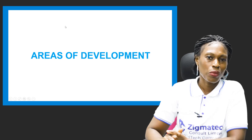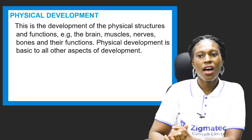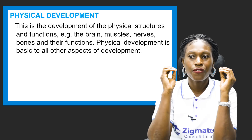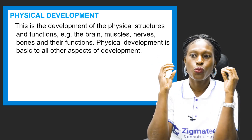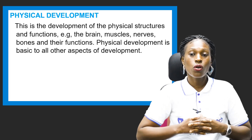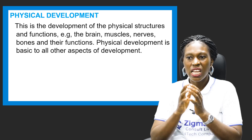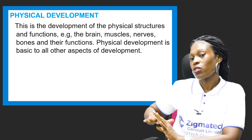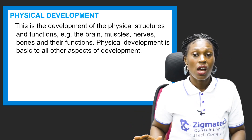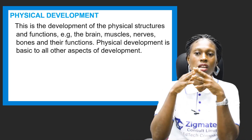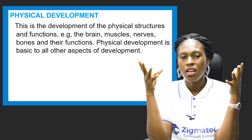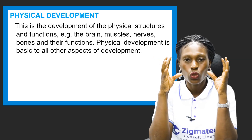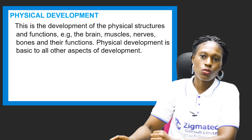What are the areas of development? The first is physical development — the development of physical structures and functions. Examples include the brain, muscles, nerves, bones, and their functions. Physical development is the basis of all other aspects of development. Every other aspect of development depends on it — physical development is paramount, it is the key to the development of a child.